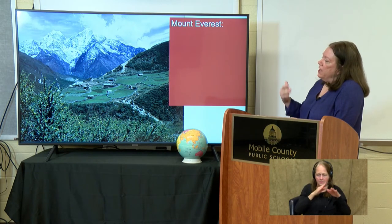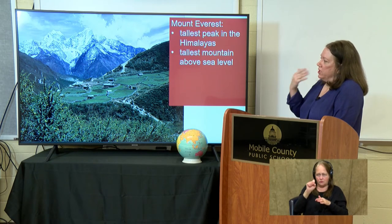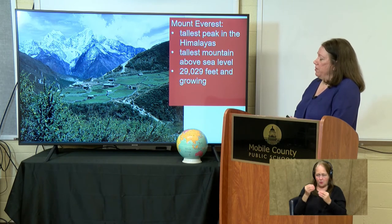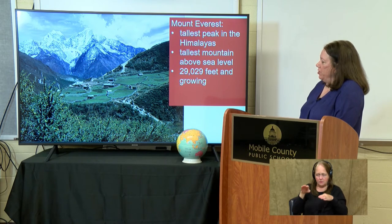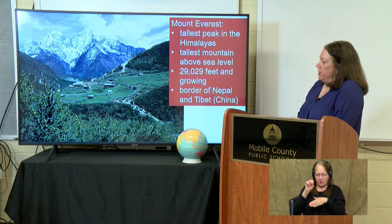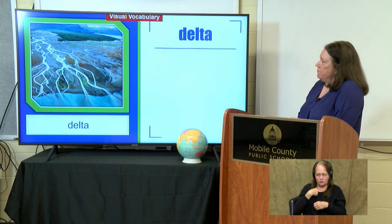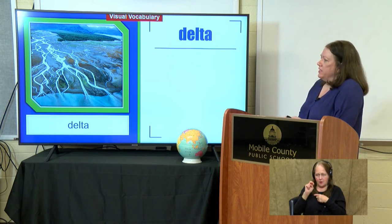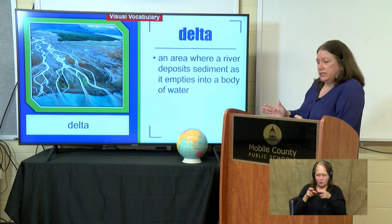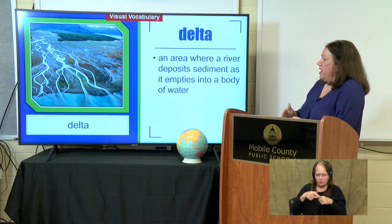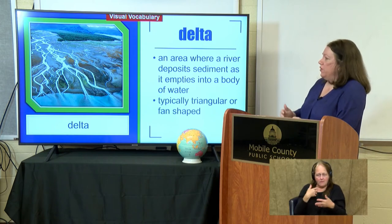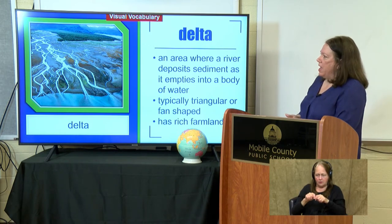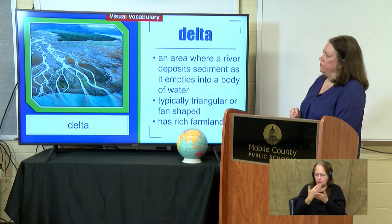The tallest peak in the Himalayas is Mount Everest, also the tallest peak above sea level in the world at 29,000 feet — and growing, as those two continental tectonic plates continue to push against each other. It stands on the border of Nepal and Tibet, an area in China. A delta is an area where a river meets its mouth, empties into a body of water, and typically deposits rich sediment there. It often has a triangular or fan shape, and that's where you tend to have very fertile land, which is good for growing.